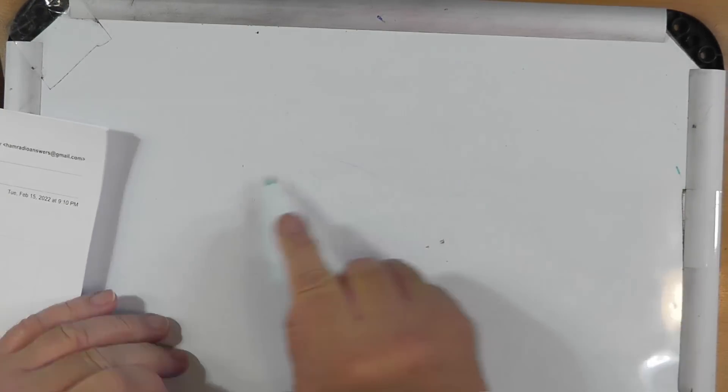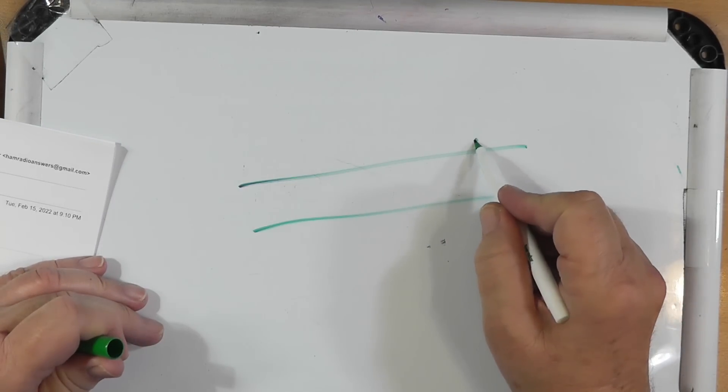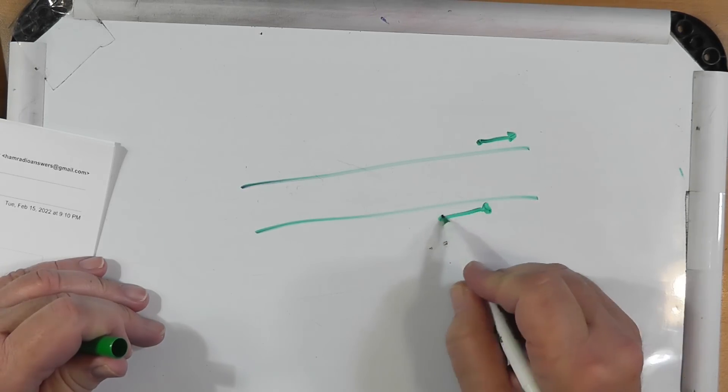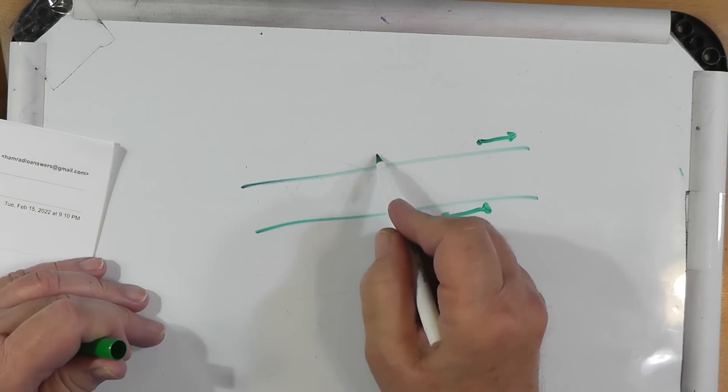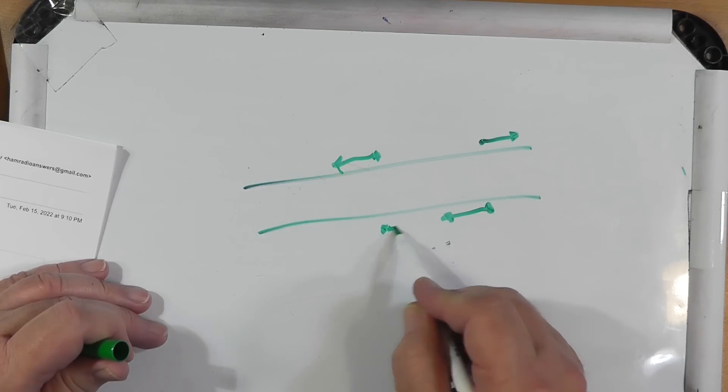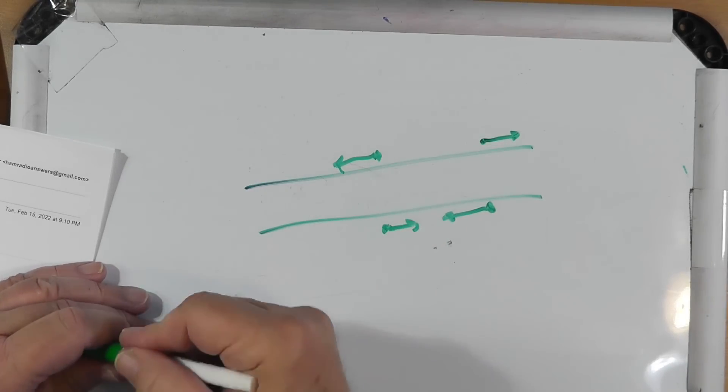I've shown this a couple different ways. Let's try this way. If you've got parallel lines, when the electricity flows this way, this over here flows this way. And when this flows this way, this over here flows this way. They're balanced. They're going opposite each other. Now, one of the nice things about balanced line is it picks up very little noise, because it's balanced. Most noise is not.